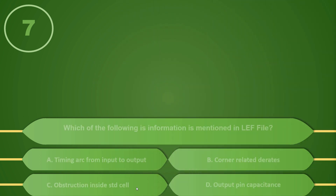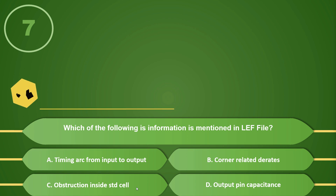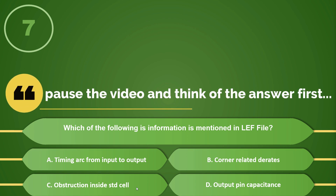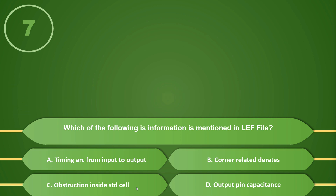The next question is: Which of the following information is mentioned in the LEF file? If your answer is C, obstruction inside a standard cell, then you are correct.